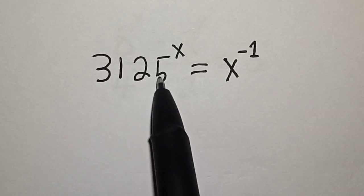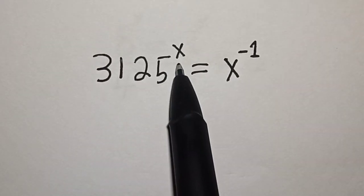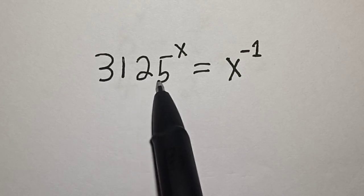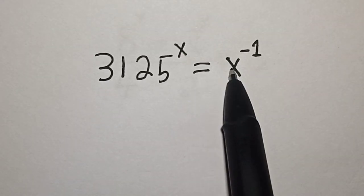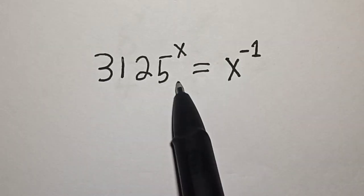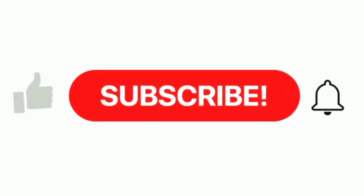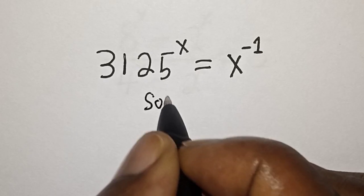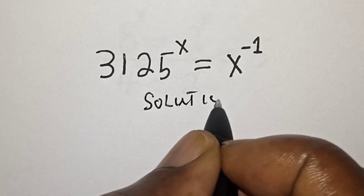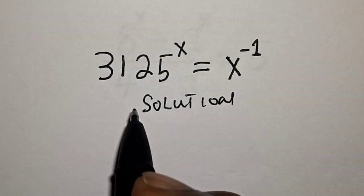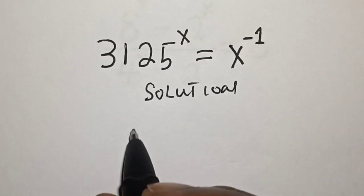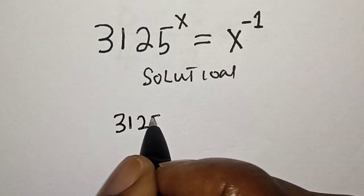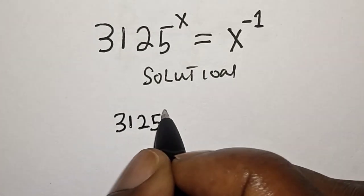Hello, welcome to Magist. In this class we want to find the value of s from this equation: 3125 raised to the power s is equal to s raised to the power minus 1.